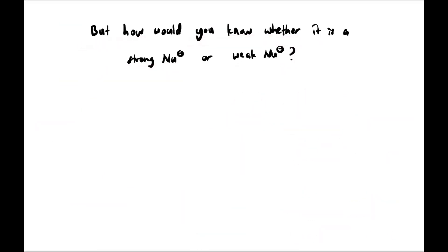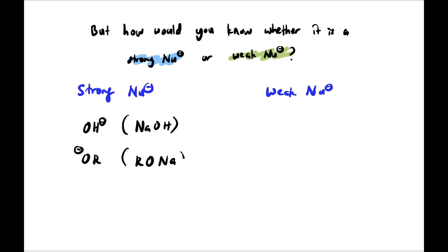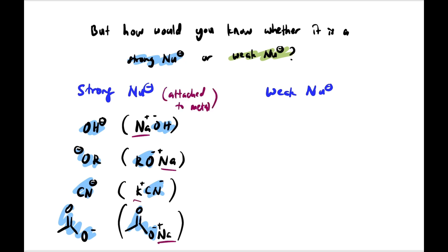Now the question arises: How would you know whether it's a strong nucleophile or weak nucleophile? The story is like this. If strong nucleophile, usually it already has a charge present there. Examples like OH minus and RO minus come from NaOH and also RONa. These are examples of strong nucleophiles. Besides that we have CN minus, K plus CN minus. And then one more is CH3COONa, which gives CH3COO minus. So these are the strong nucleophiles, which are obviously ions attached to metals.